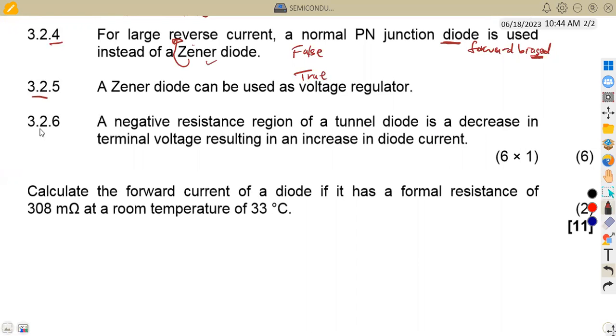3.2.6, a negative resistance region in a tunnel diode is a decrease in the terminal voltage, resulting in an increase in the diode current. So this is actually false. What we know is that in a tunnel diode, an increase in the terminal voltage, which results in a reduction in diode current. The increase of the terminal voltage results in a reduction in the diode current. That is what we know. So meaning to say this is false, the way that it is given here.